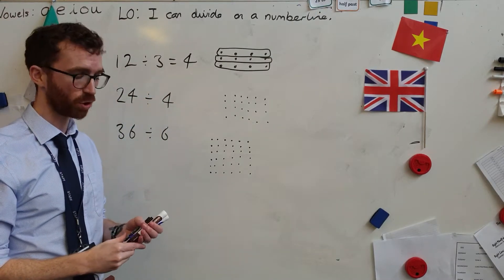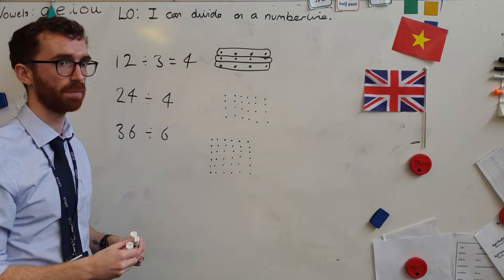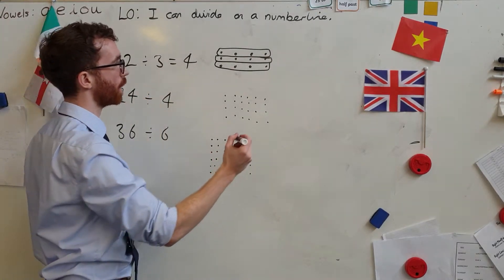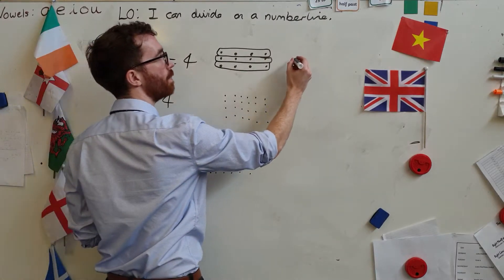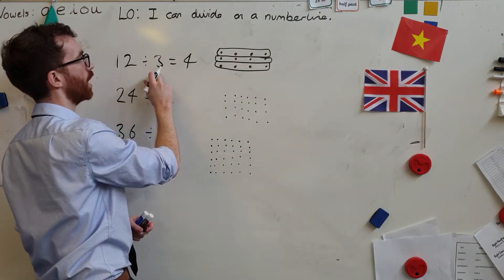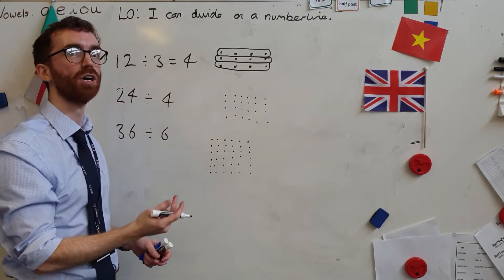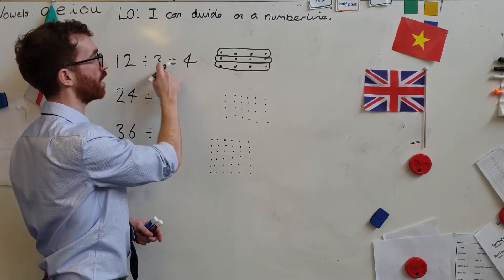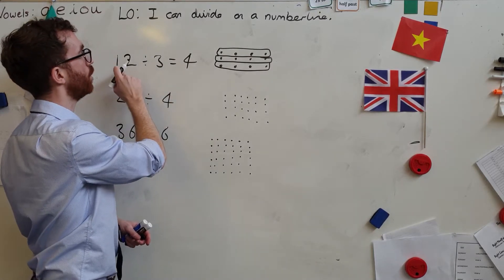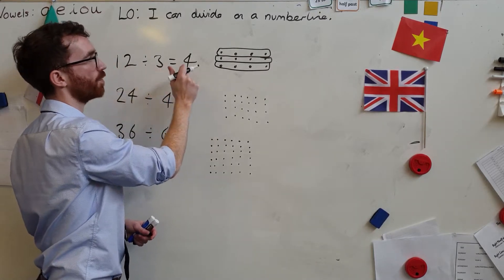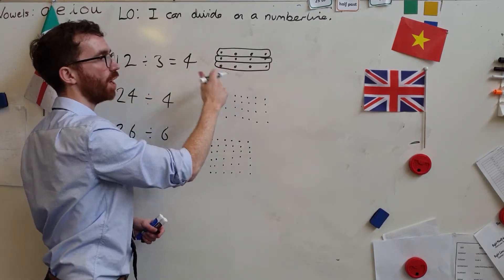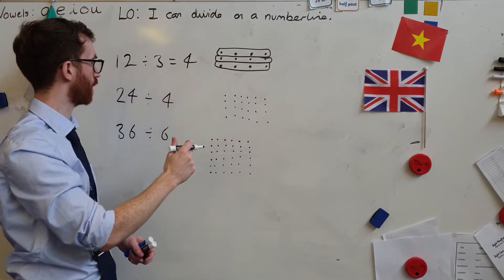I can use something called the inverse to help me — we'll look at that a little bit more later. So if I say 12 divided by three, I'm saying: three times what is 12? Well, three times four is 12. So 12 divided by three is four, and that's what it looks like.